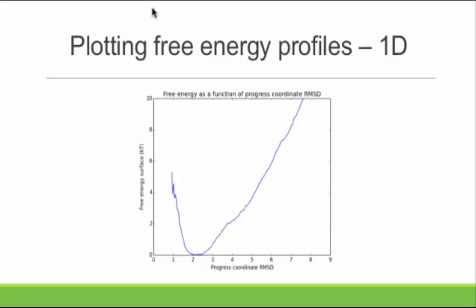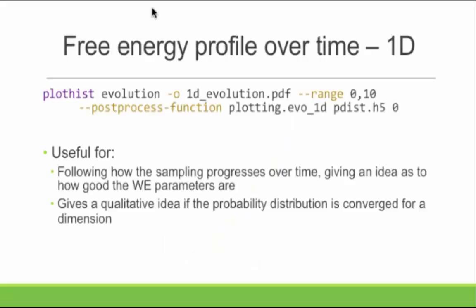You can then open the PDF in a vector graphics tool and edit it as you want — that's how I personally get publication-quality graphs. Moving over to an evolution graph, this is the second mode I use pretty frequently in FlatHist. It's very similar — only changing `average` to `evolution`. What this returns is an evolution of the probability distribution over weighted ensemble iterations, so you can track the progress of your simulation and how much sampling you have in each direction.